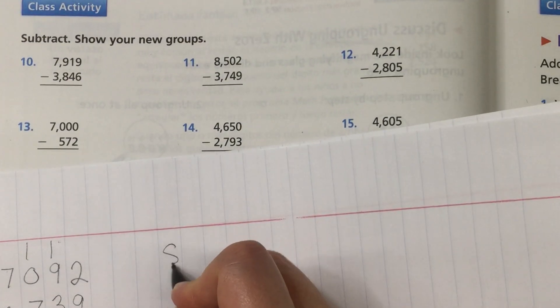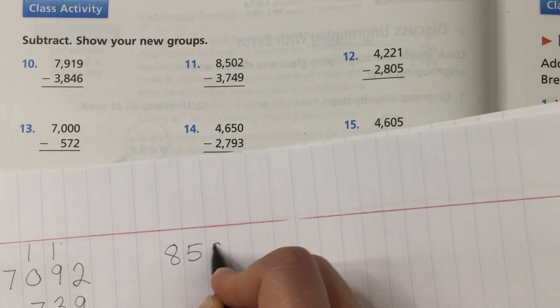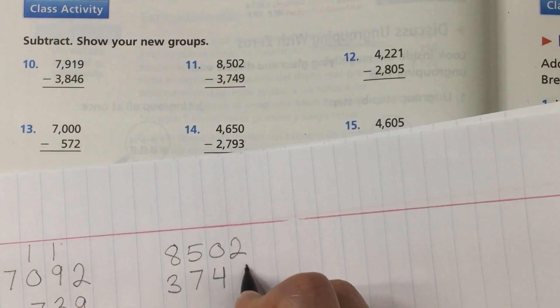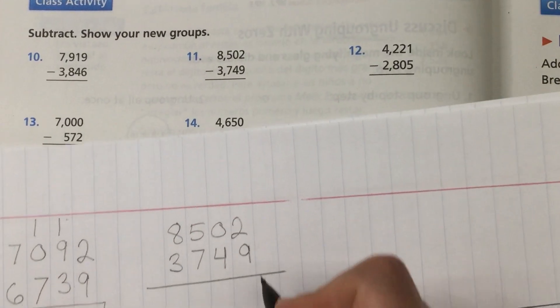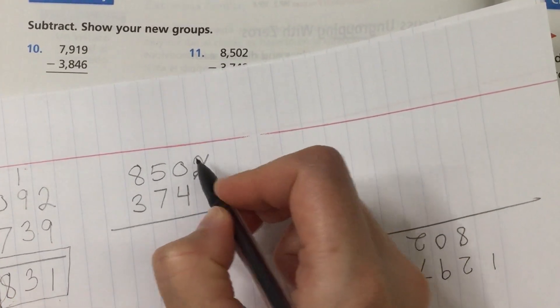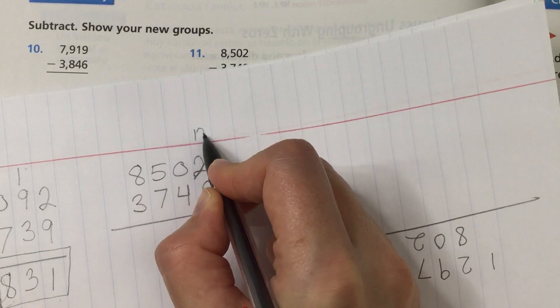I'm gonna do number 11 and I'm going to show you how I want you to do it in the lines. Stay in your lane folks! Okay is 2 minus 9 possible? No it's not. Cross out the 2. Make it a 12.